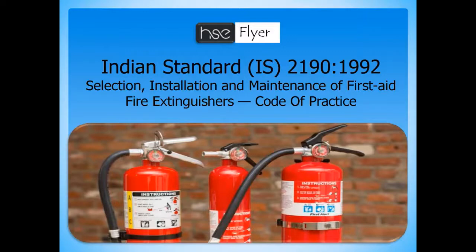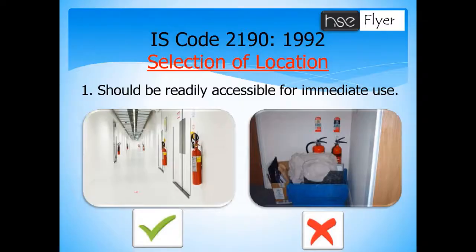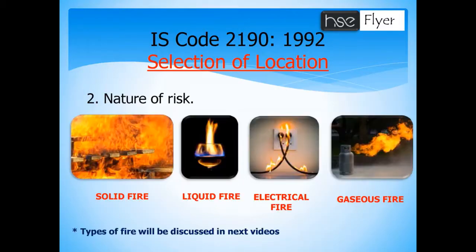This IS code will be explained in different parts. In this part of the video, we will see the location of fire extinguishers — meaning where and in which location we have to fix the fire extinguisher. As per IS standard code, the location of a fire extinguisher should be easily accessible to anyone in the event of a fire.